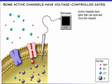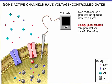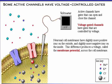Active channels have gates that can open and close the channel. Some active channels, called voltage-gated channels, have gates that are controlled by voltage. Recall that cells have slightly more positive ions on the outside of their membranes and slightly more negative ions on the inside. This difference produces a voltage, called the membrane potential, across the cell membrane. We can measure the membrane potential and display it on a voltmeter.